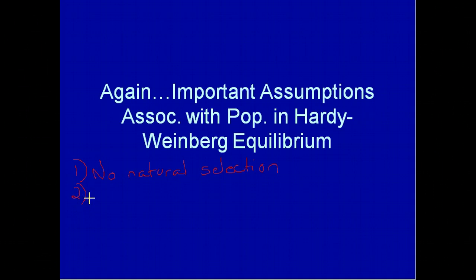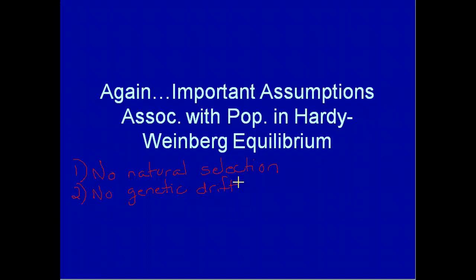There is no genetic drift. Genetic drift is essentially a random change due to a sampling effect — in other words, one allele doesn't just get lucky and is present in the population more than another.